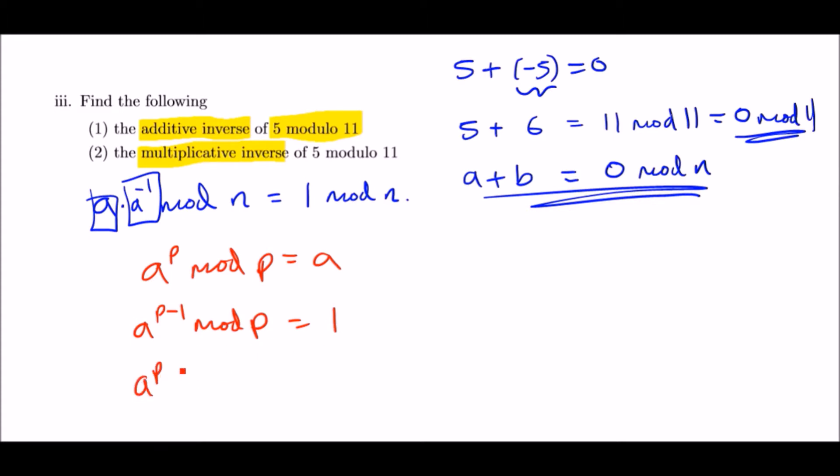One times a to the negative 1 is a to the negative 1. That's it. This is the formula we want to use. Thank you Fermat, you really helped us solve these kinds of problems.